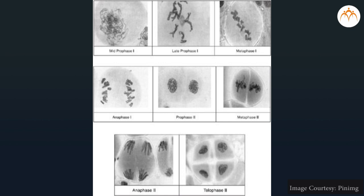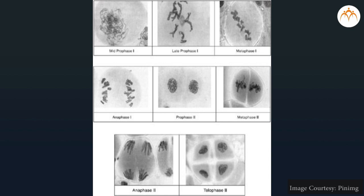Meiosis 2 is similar to mitosis. The haploid chromosomes remain constant in all four daughter cells.